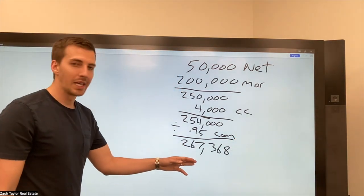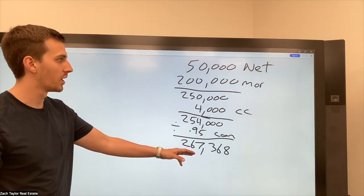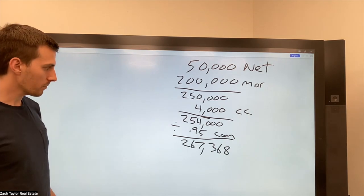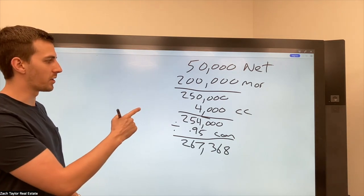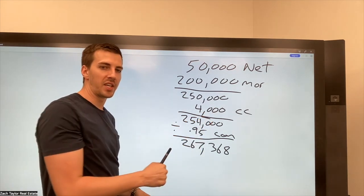Let me label this commission. So this is what I have to get a purchase and sale agreement for $267,000 in order for them to net $50,000. Another important topic. I didn't cover the last one, but let me go ahead and cover it is when you call your title company.